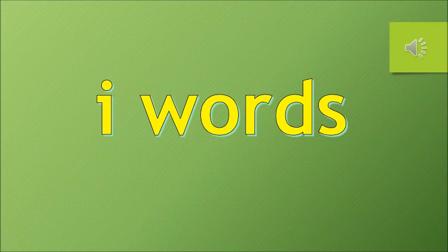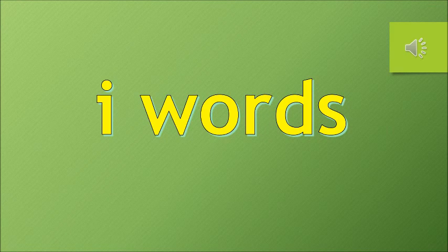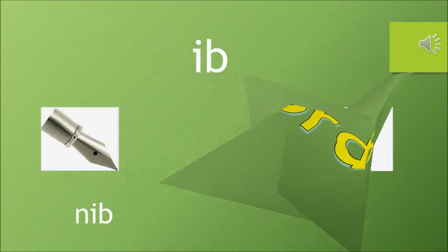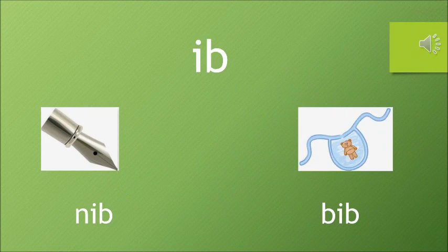So now let's have a quick recap of the I words. The first I word we are doing is IB. Sound of I is E, sound of B is B, so it is IB. And the words are NIB and BIB.